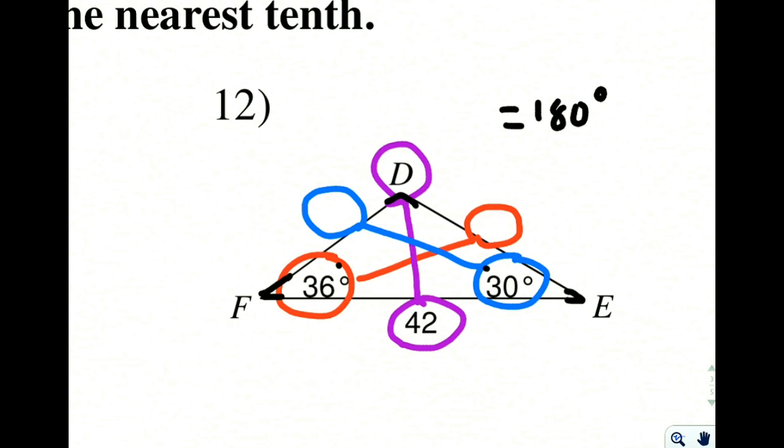And if we take 180 and we take away that 36 and we take away that 30, that's going to leave us with 114 degrees for angle D.